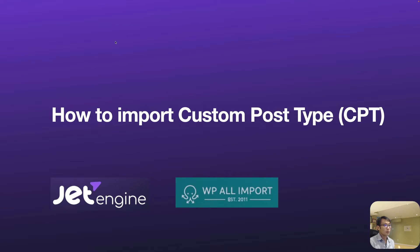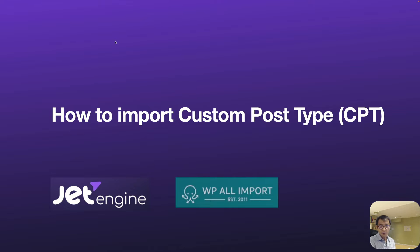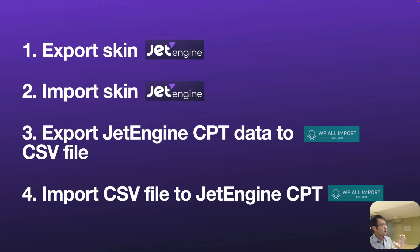We're going to be talking about how to import custom post type (CPT). We're going to be using JetEngine and WP All Import plugin. JetEngine is not a free plugin, and WP All Import has a free version, but the free version didn't work for this demo so I'm using the paid version. The four steps are: export skin, import skin, export JetEngine CPT data to CSV file, and import the CSV file to JetEngine CPT.